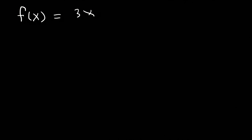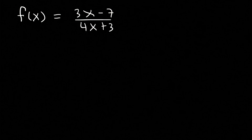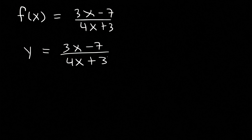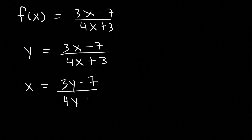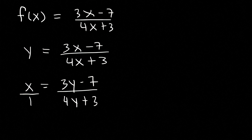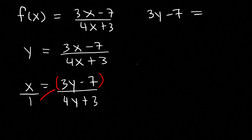Now let's look at one final example. This one is going to be a little bit harder than the other ones. So let's say that f of x is 3x minus 7 divided by 4x plus 3. Like before, we're going to switch f of x with y. And then we're going to switch x with y — so everywhere you see an x, replace it with a y. Now, how can we isolate the y variable? What I would recommend doing is to write x as x over 1 and cross multiply. So 1 times 3y minus 7 is 3y minus 7. And then we have x times 4y plus 3, so that's going to be 4y times x and then 3 times x.